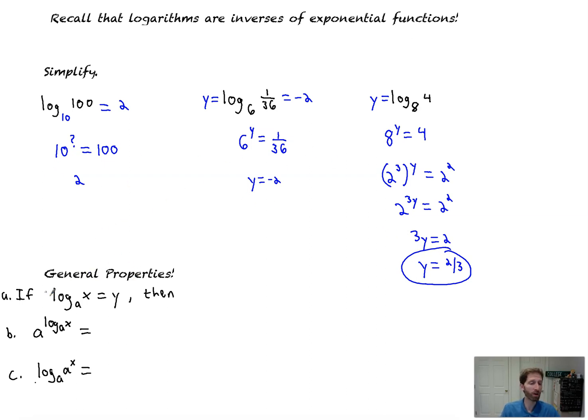A couple of general properties to go over. If log base a of x equals y, then here's the most important property of them all. a to the y equals x. That's basically the definition of logarithms. a to the log a of x is equal to x, because you're basically saying that we are going to exponentiate with a, and then also take log a. They're inverses. They undo each other, and we're left with x. Same thing here. We're just doing it in a different order. So we're taking log base a of a to the x. So they're inverses. They undo each other, and we're left with x.